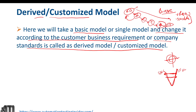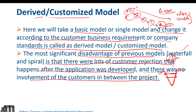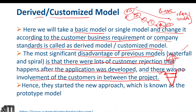The most significant disadvantage of previous models like the waterfall model and spiral model is that there were lots of customer rejections after the application was developed, because there was no involvement of the customer during the project. Customer involvement was very rare or very less. So again, a new customization was needed — that's why the prototype model was introduced.